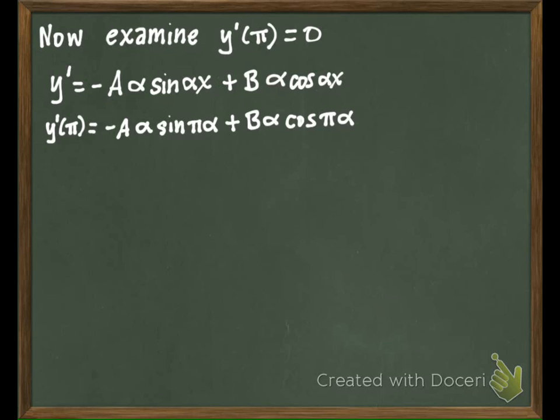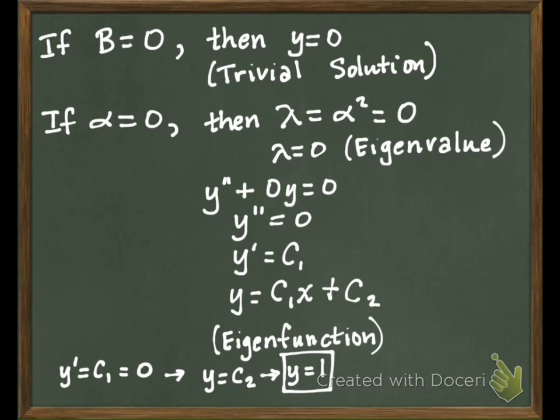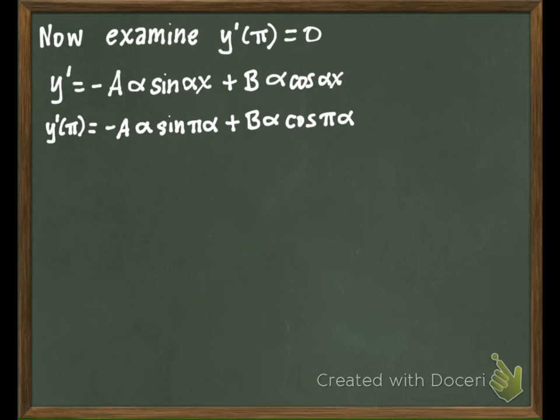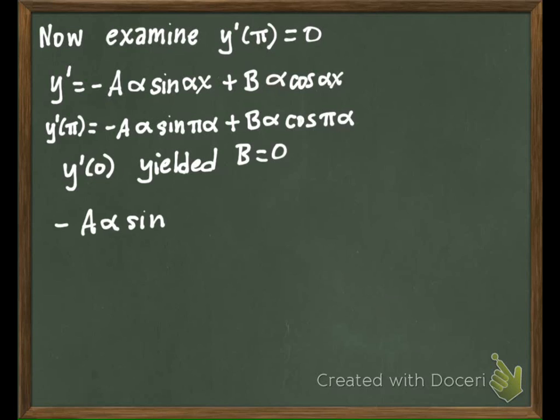We established from the other condition that B was zero back over here. Either we had B equals zero or alpha equals zero from over here, so we've already talked about that. So let's look back over here.